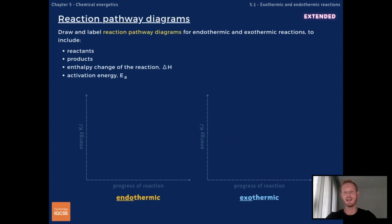You need to be able to draw and label reaction pathway diagrams for endothermic and exothermic reactions. So when drawing reaction pathway diagrams, start by drawing a horizontal line on the left to show the energy of the reactants, and then a horizontal line on the right to show the energy of the products. The distance between these two lines is the enthalpy change of the reaction.